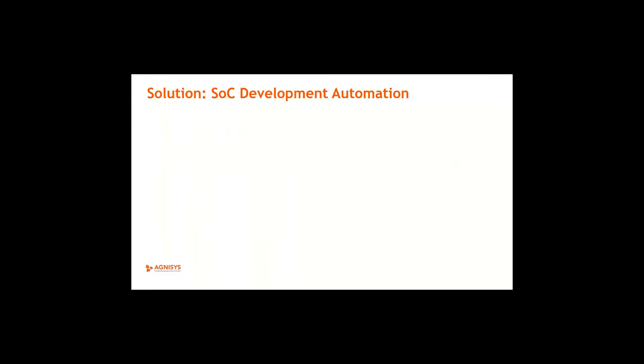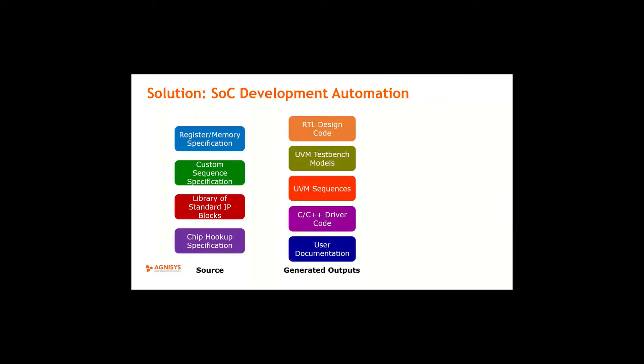So the solution is, according to us, focus on the specification. Now there are different types of specifications, like Dave mentioned, registers and memory specification. There's also custom, you could have either tests or programming sequences. Then you have, you might have a list of IPs that you're reusing. So that's a set of reuse IPs that you need to specify. And then, how are you connecting these IPs, that ship hookup specification. So all these are sources of information. And then they can be used to generate the outputs.